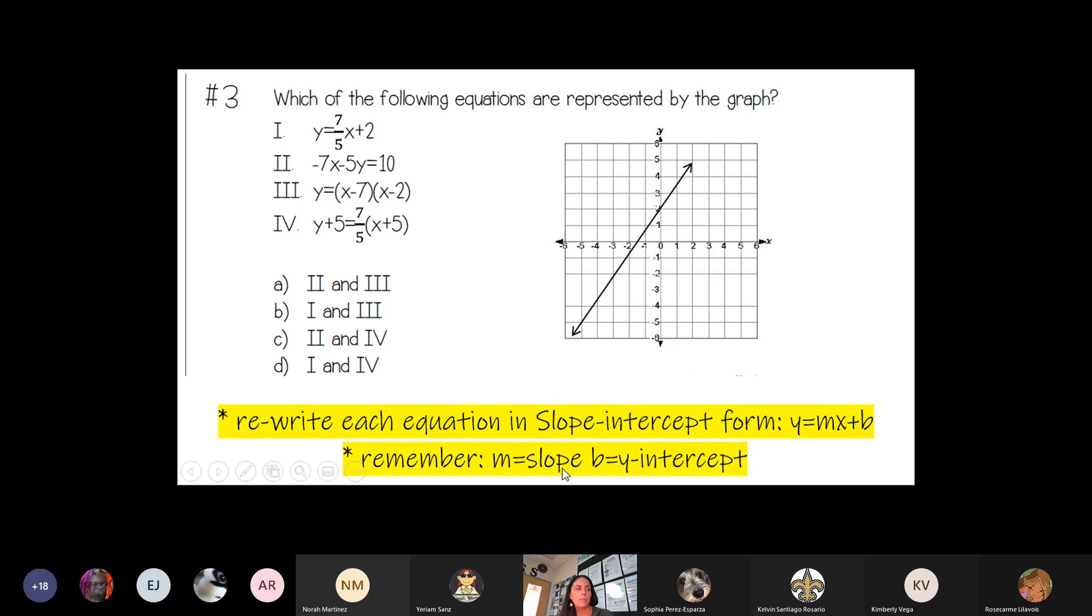Remember that m is your slope, b is your y-intercept. So looking at this graph, this point right here is my y-intercept. So that means b is equal to 2. Well, in this first equation here, my y-intercept is also 2.